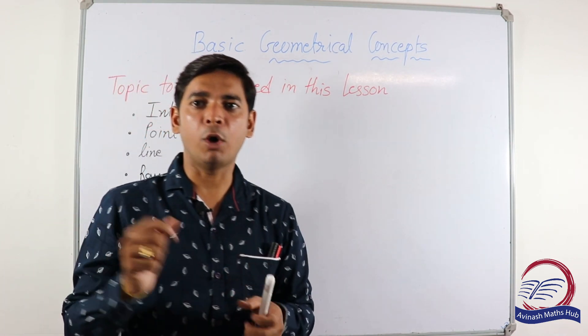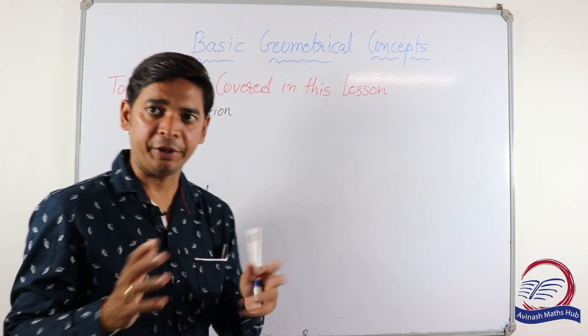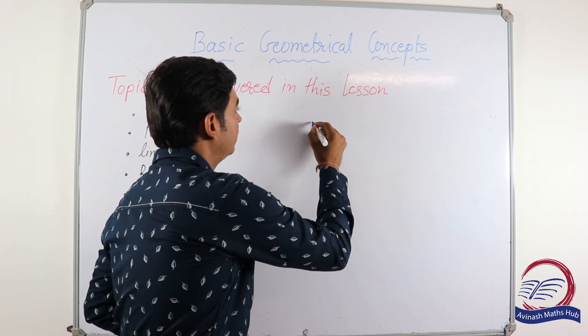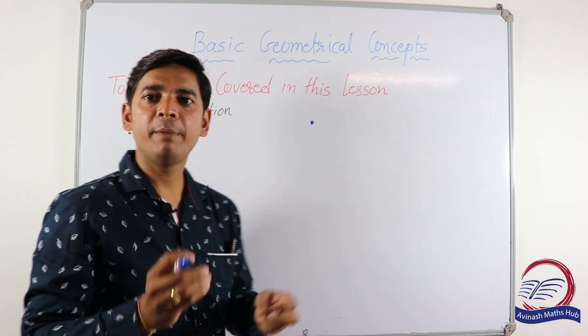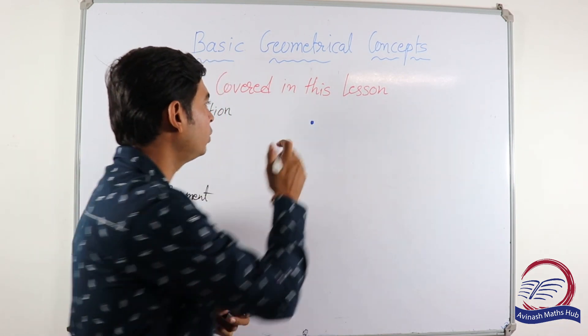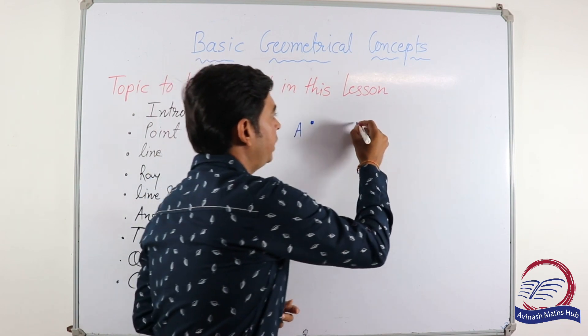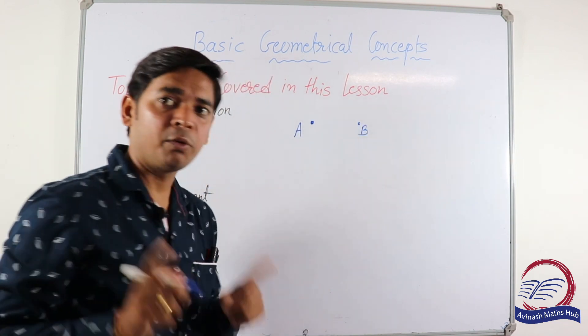First topic is about the point. What is a point? A point is a dot made by a sharp pencil. Think about this is point A, this is point B. Remember one thing, we have to use capital letters to show points, and a point shows location.